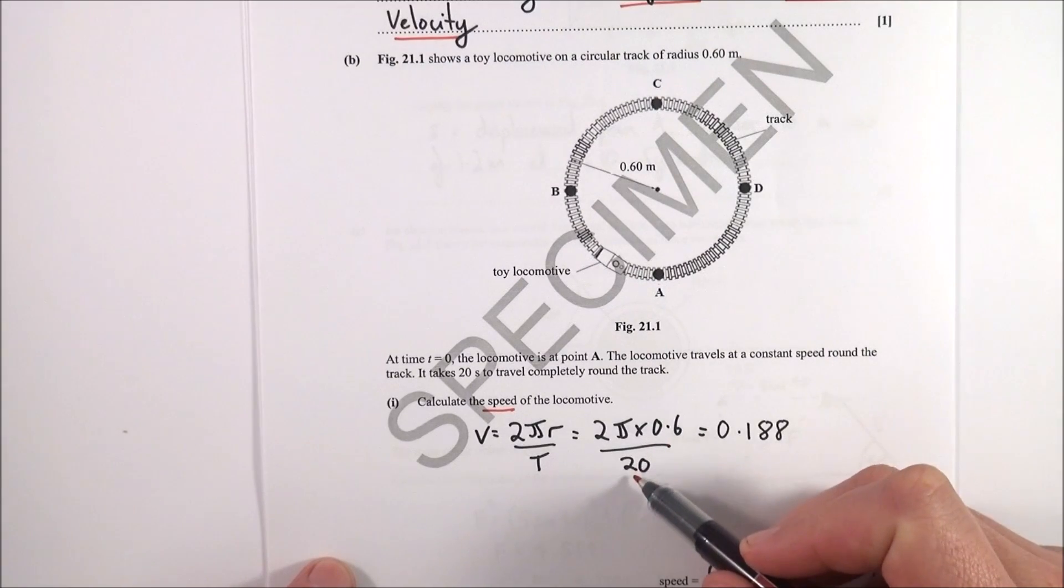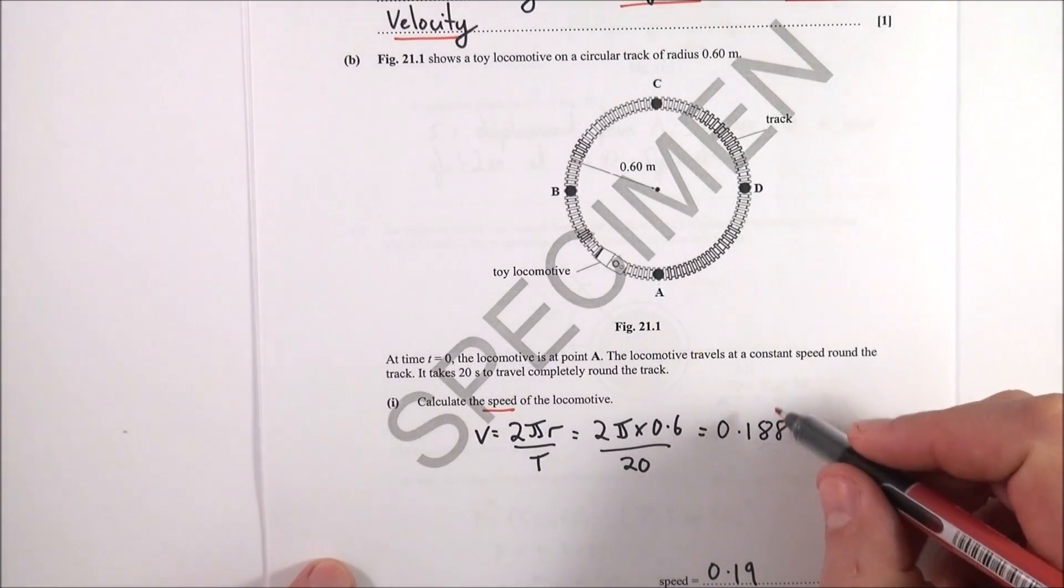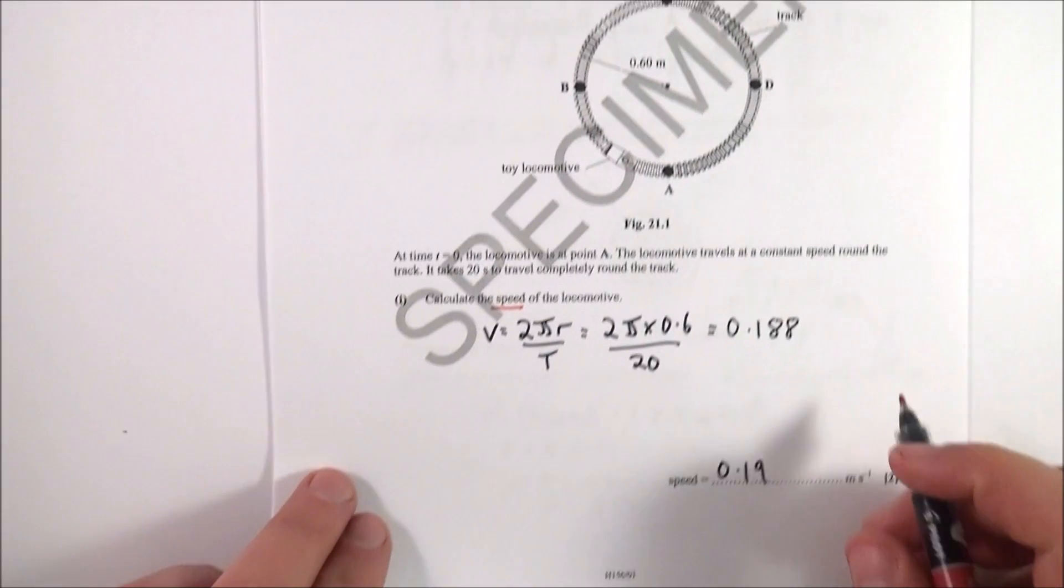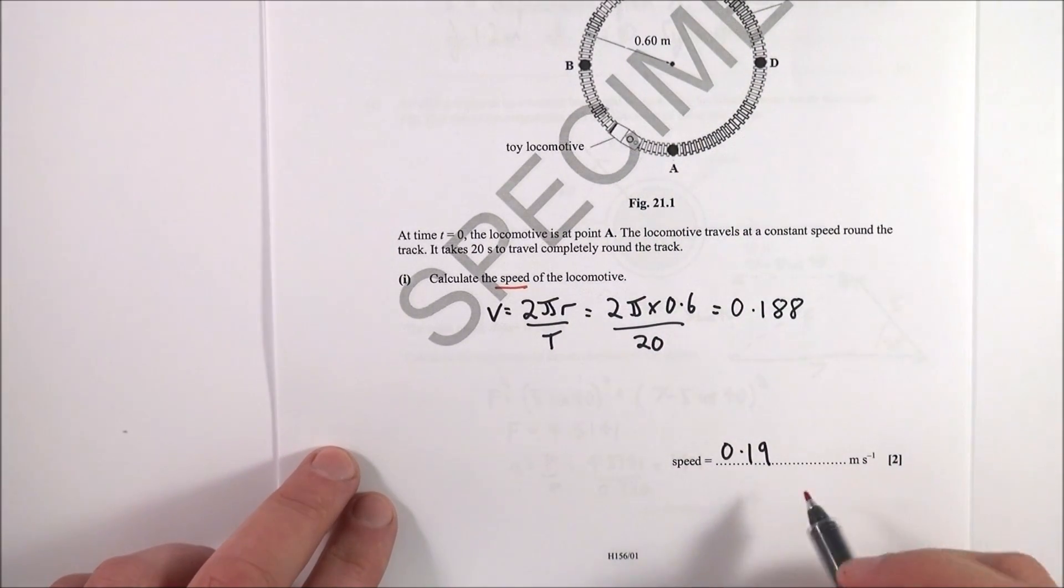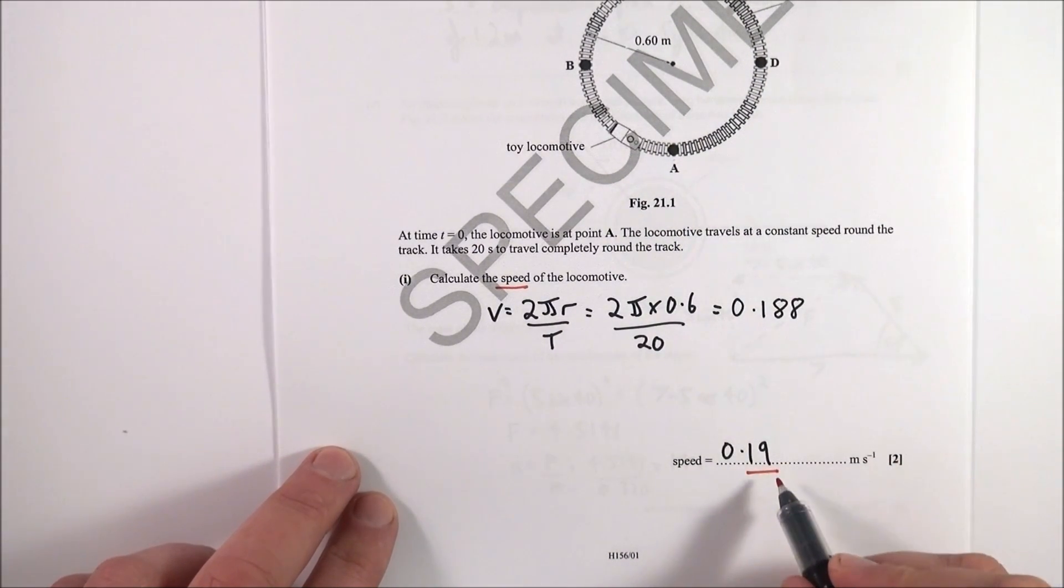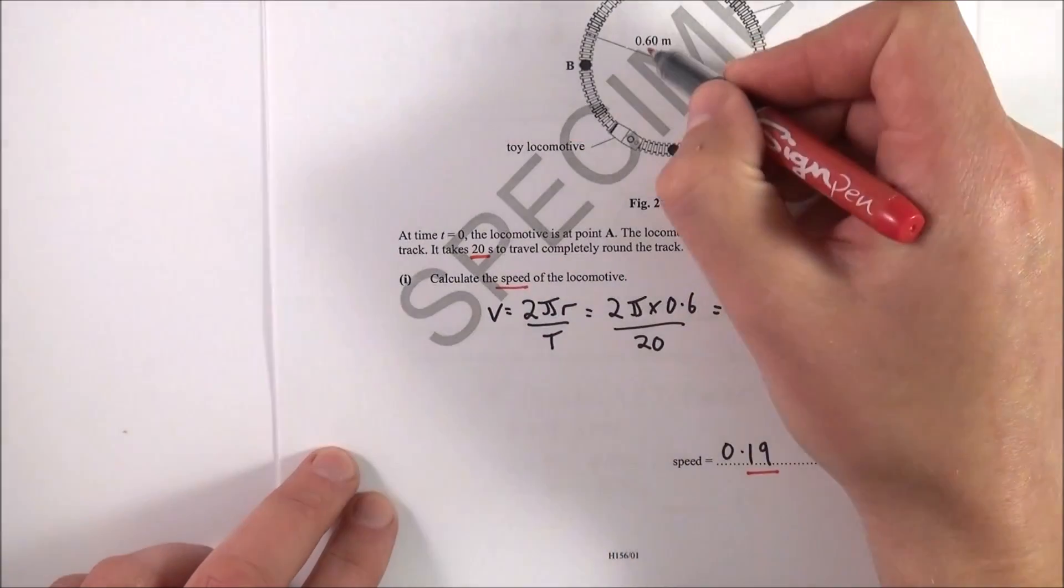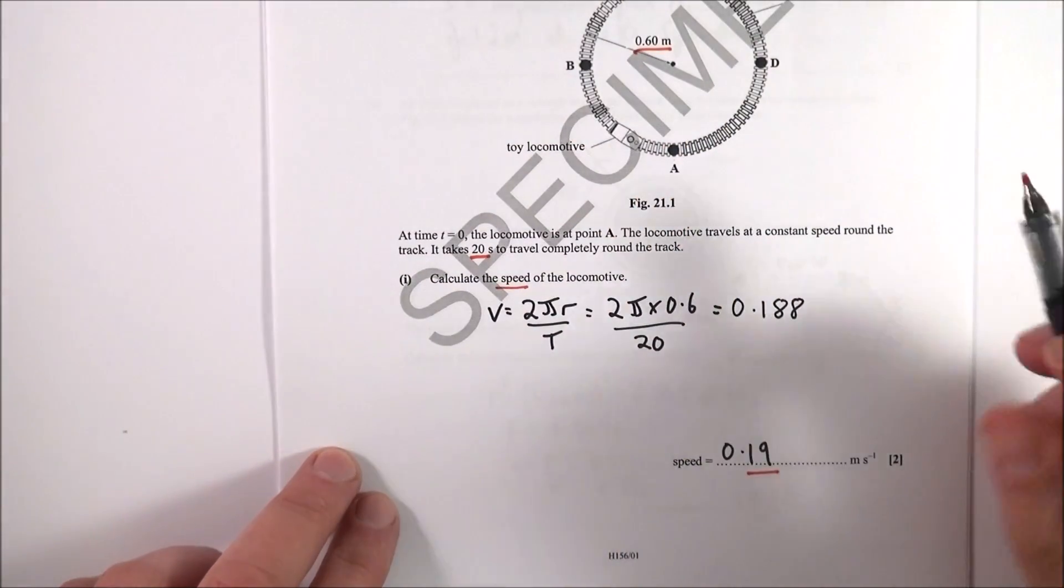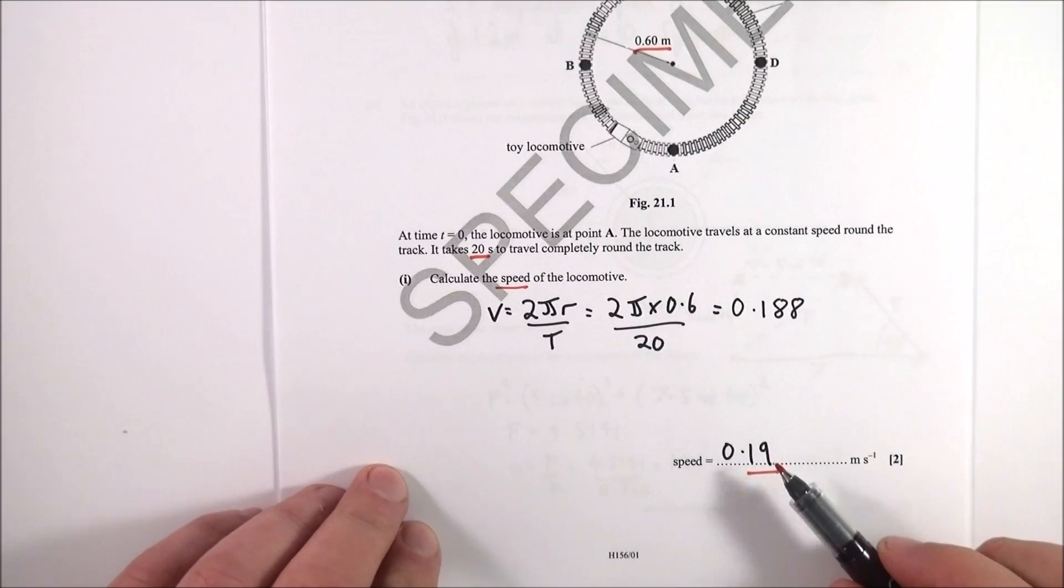That gives a value of 0.188, and I've given my answer here as 0.19 to make sure it's to two significant figures, just like the raw data that we have in the question. So 0.19 meters per second.